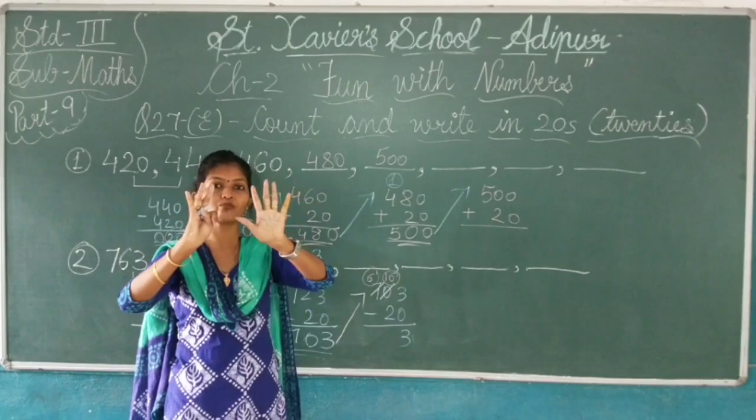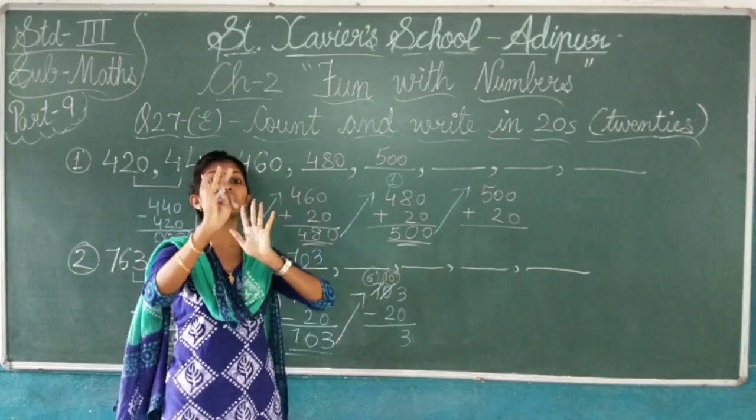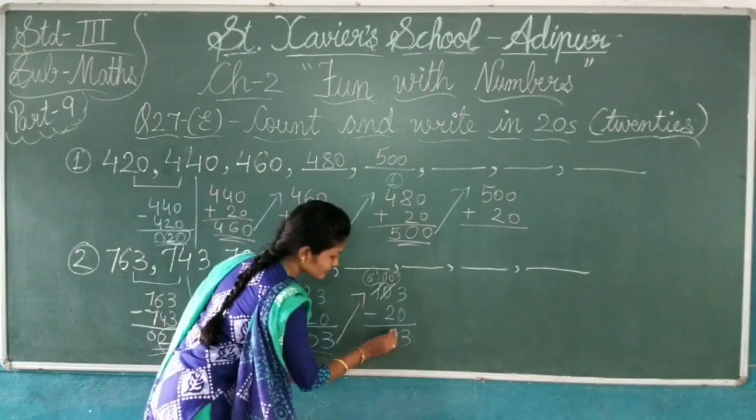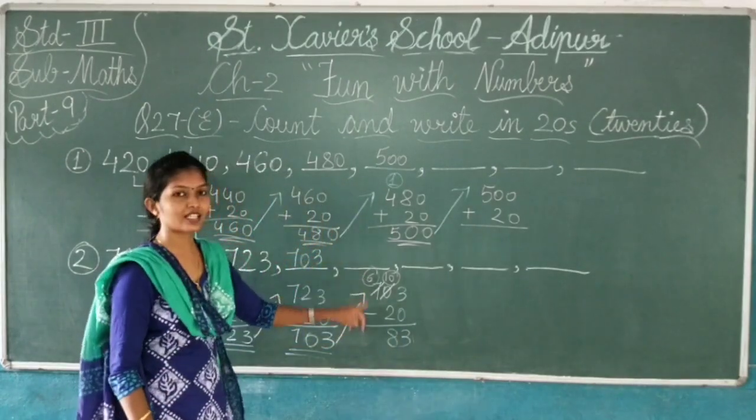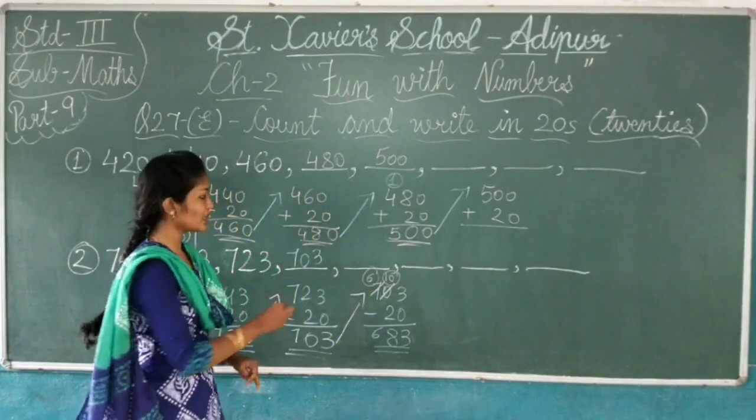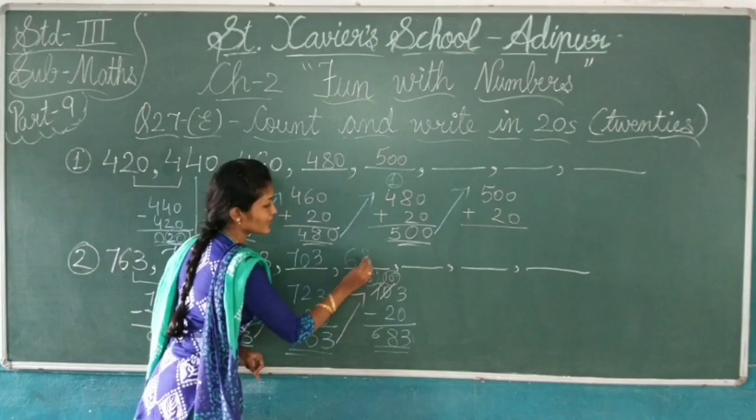So what I will do, I will borrow. So here is 10 minus 2. How much is left? 8. So what will I write here? 8. And 6 minus 1 is 6. So what will I write here? 683.